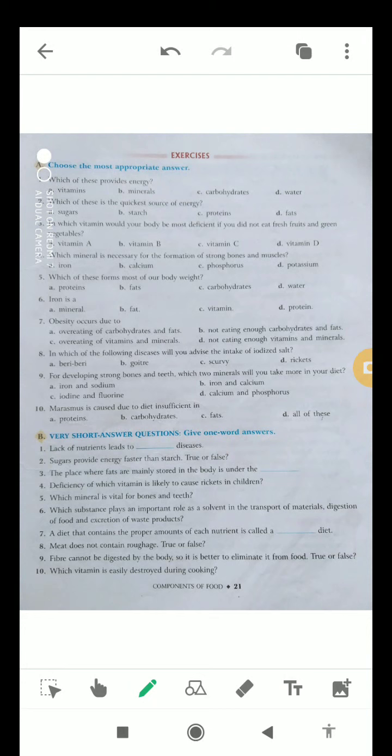Let's start with the MCQs. The first question is which of these provides energy? The options are vitamins, minerals, carbohydrates, and water, and the correct option is C, carbohydrates. Question number two, which of these is the quickest source of energy? The options are sugars, starch, proteins, and fats. The correct answer is sugars.